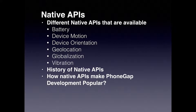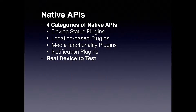There are so many other plugins that extend support for specialized hardware features that are not yet part of PhoneGap core plugins. In general, we divide them into four different categories: device status plugins, location-based plugins, media functionality plugins, and notification plugins.